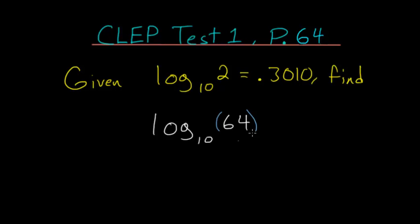What we can notice is that 64 is just equal to 2 multiplied by itself 6 times. So if we rewrite our logarithm,